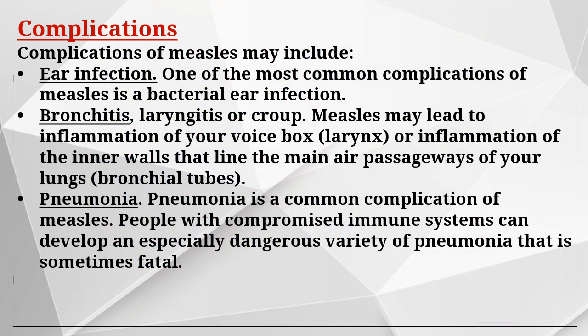Complications of measles may include ear infection, which is one of the most common complications. Measles may also lead to inflammation of the voice box and inflammation of the inner walls lining the main air passages of the lungs. Pneumonia is a common complication of measles. People with compromised immune systems can develop an especially dangerous variety of pneumonia that is sometimes fatal.